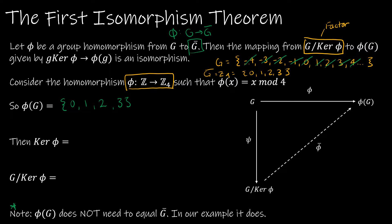On our picture, we have G — all of the integers — being mapped to a smaller group. We're collapsing G into {0, 1, 2, 3}. What the first isomorphism theorem says is we collapse G into another smaller group, and those two groups are going to be isomorphic — same number of elements, behaving in the same way.